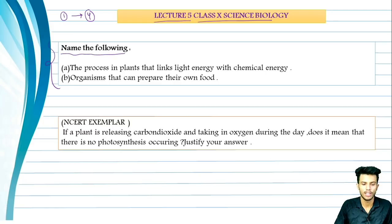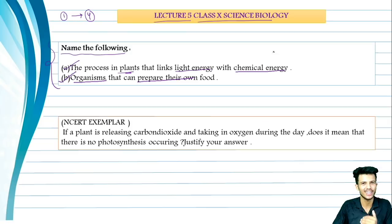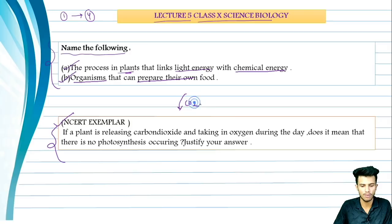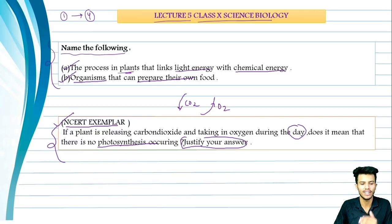Name the following: Which process is where a plant converts light energy into chemical energy? And the second question is, which organism prepares its own food? If you don't know the answers, I will discuss them at the end of the lecture. There is also an NCERT example question: if a plant is releasing carbon dioxide and taking in oxygen during the day, does it mean that there is no photosynthesis? This is a very important question.